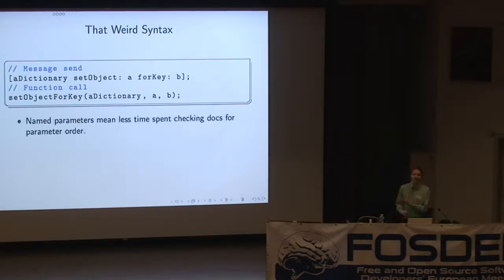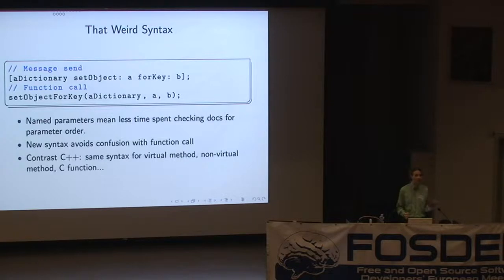This syntax takes a little bit of getting used to, but it's actually really nice. You find after a while that you can read Objective-C code that uses a library that you've never seen before. And you're not constantly checking the API documentation to find out what stuff does, because every parameter is named. You don't get confused with parameter order. Everything that is an Objective-C message send is in no way confusable with a C function call. So it's easy to look at a bit of code and see what the performance characteristics are going to be.